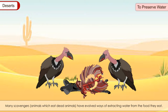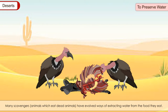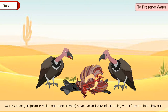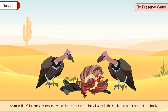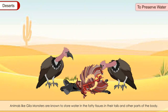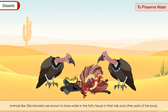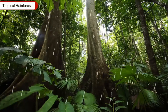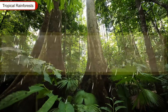Many scavengers — animals which eat dead animals — have evolved ways of extracting water from the food they eat. Animals like gila monsters are known to store water in the fatty tissues in their tails and other parts of the body.